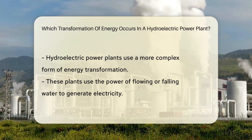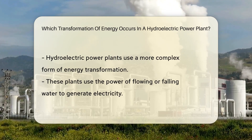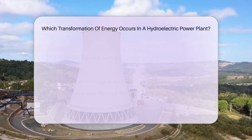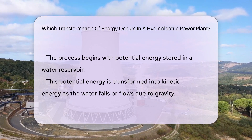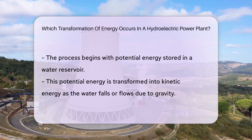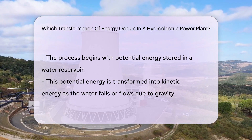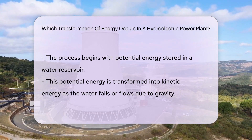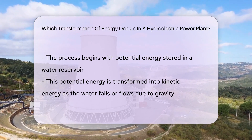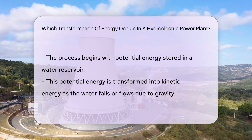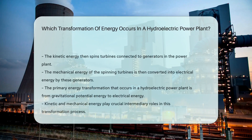In the case of hydroelectric power plants, the transformation is a little more complex. These plants harness the power of flowing or falling water to generate electricity. First, potential energy stored in a water reservoir is transformed into kinetic energy as the water falls or flows due to gravity. This kinetic energy then spins turbines connected to generators in the power plant. The mechanical energy of the spinning turbines is then converted into electrical energy by these generators.